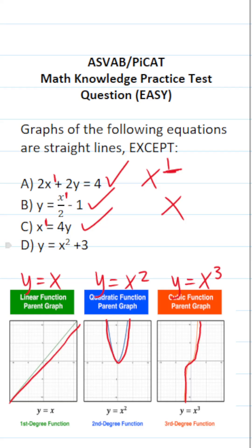In answer choice D, however, we have y equals x squared plus 3. This is a quadratic function, so its graph is going to look like a parabola, not a line. So this one is going to be D. Y equals x squared plus 3 is a quadratic function. Therefore, it is not an equation of a straight line.